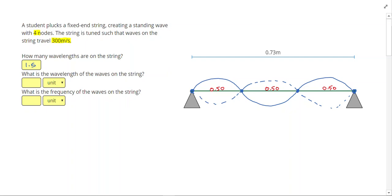Then it says what is the wavelength of the waves on the string? Wavelength is the length of one wave. If we remember that one wave looks like this, then our wavelength is this distance right here. So if I call this my total length L and this is my wavelength lambda, to figure out lambda, I can use my number of waves, or do my length divided by my number of waves. So 0.73 divided by 1.5, and that gives me 0.487 meters.